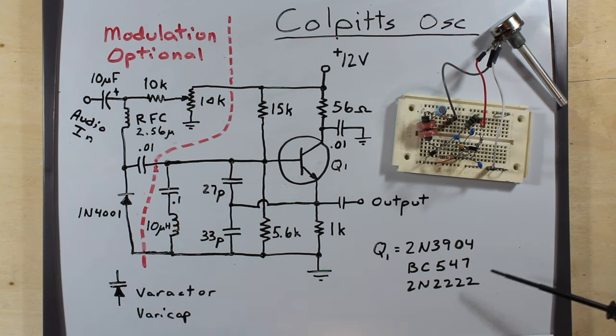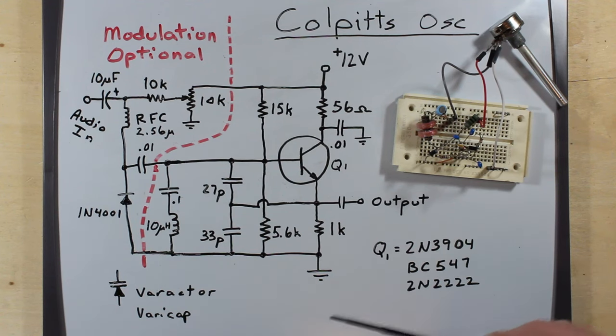FT or gain bandwidth product of around 250 million or 250 megahertz, 300 megahertz for some, depends on who makes them and when they were made. But that's the basic idea there.